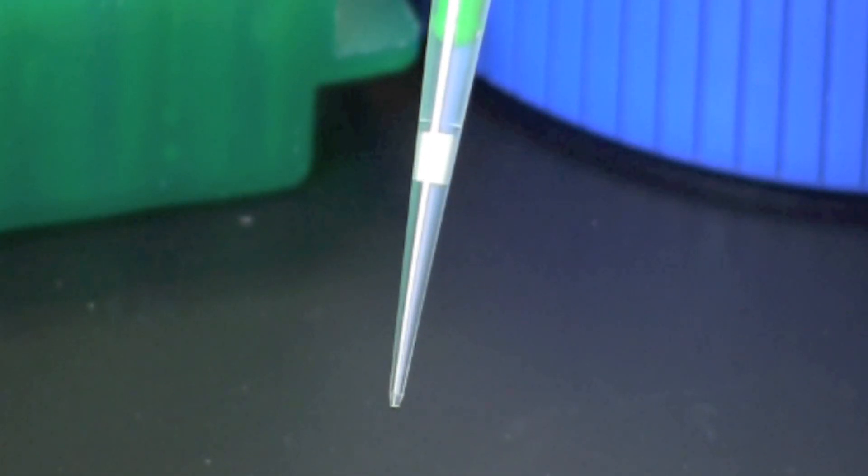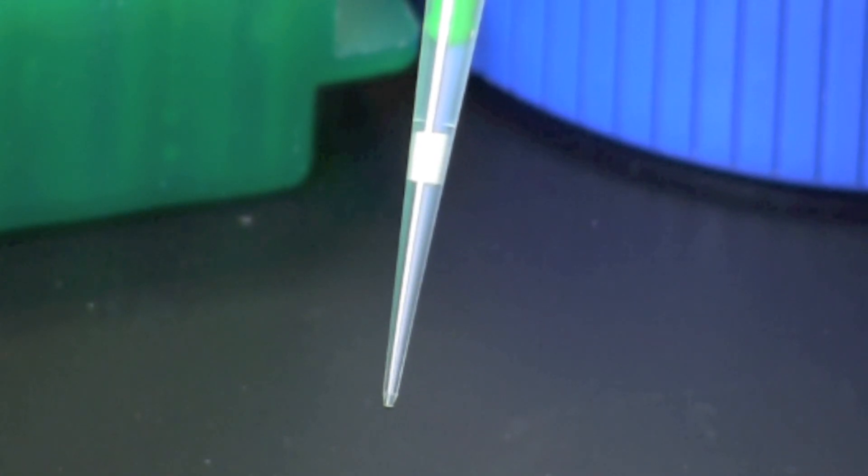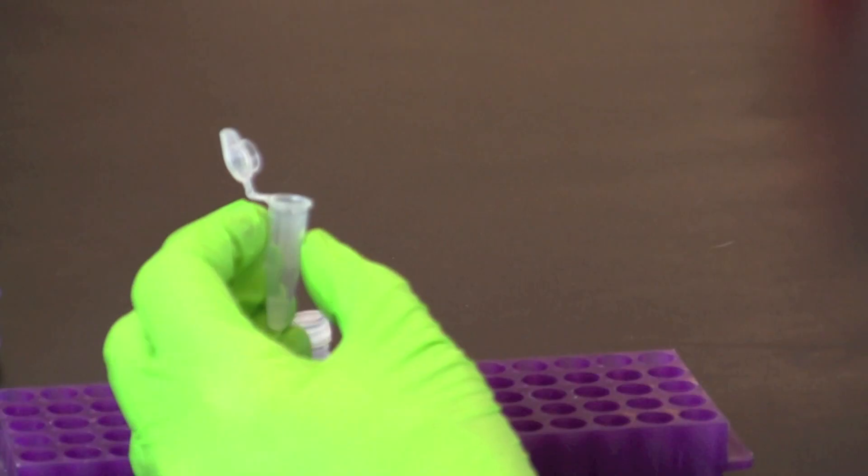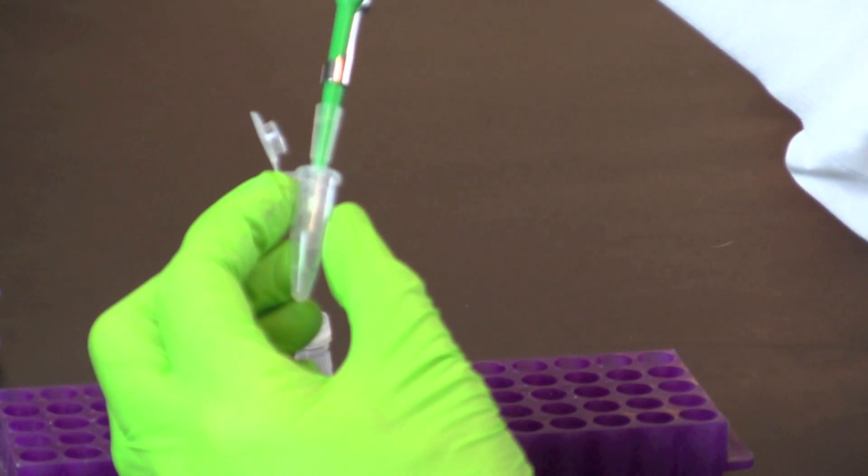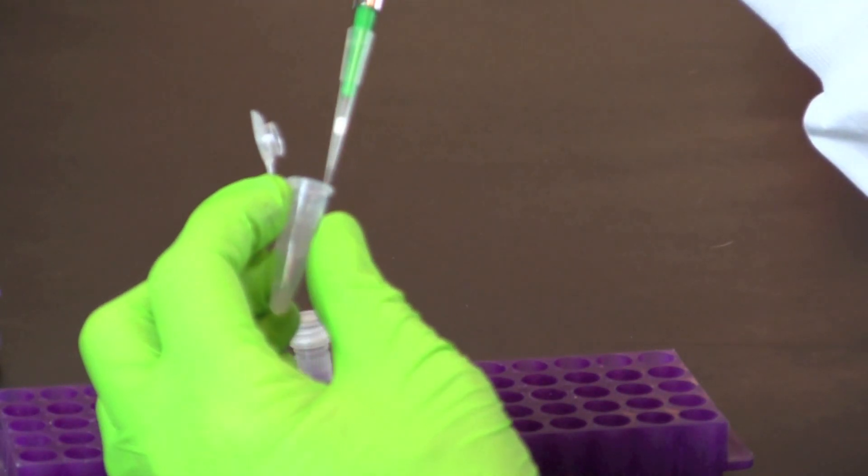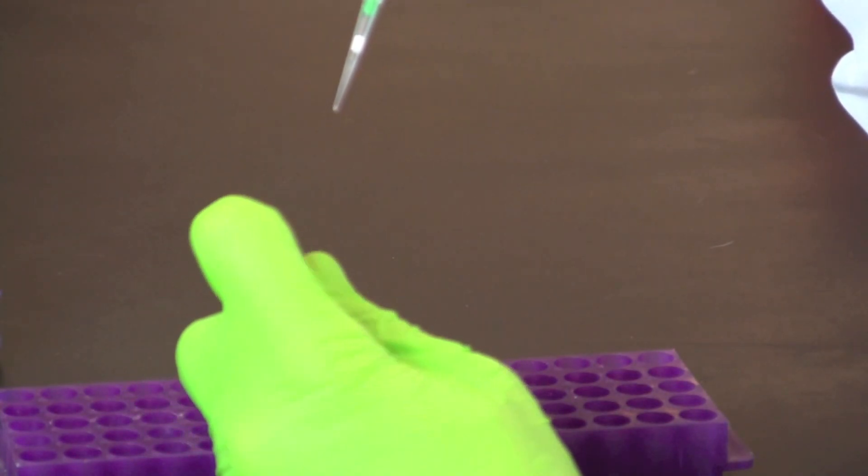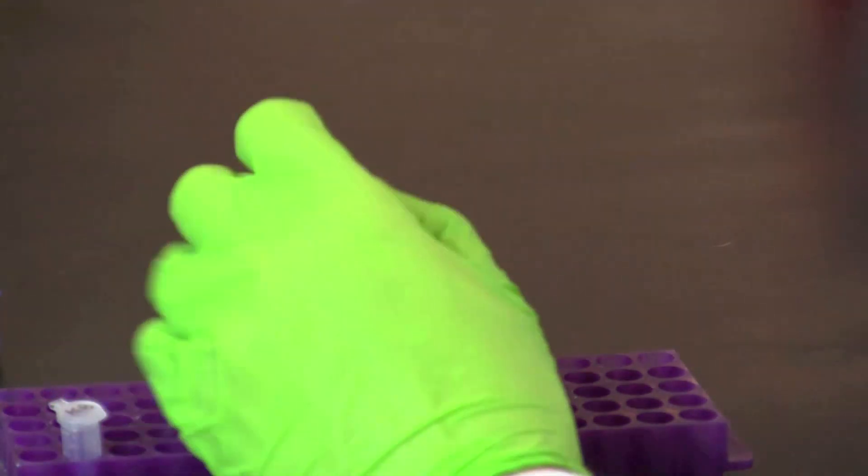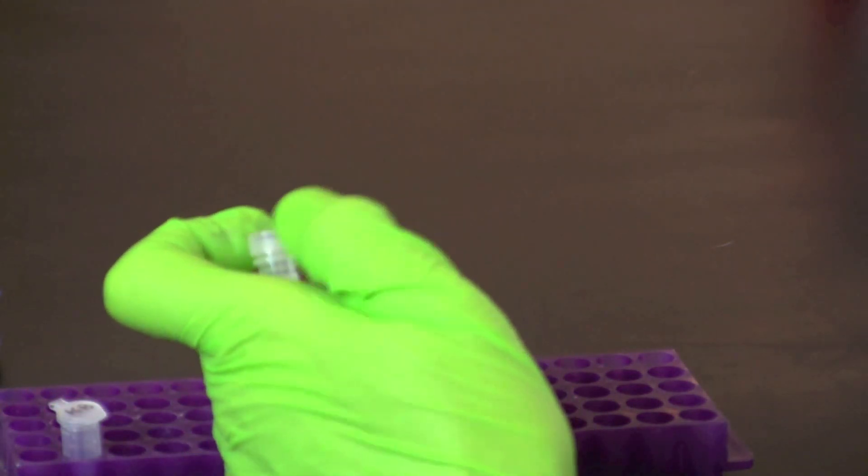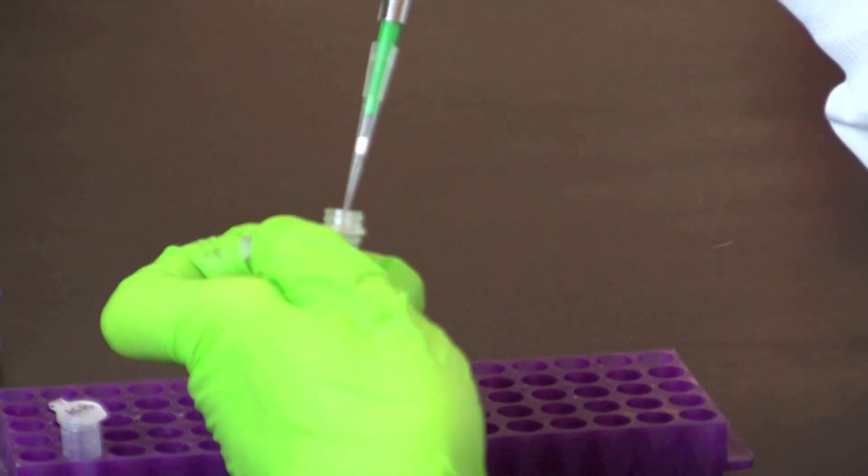Set your micropipet to 20 microliters. Always use aerosol barrier tips when setting up PCR reactions to prevent transferring aerosols from the pipette to the sample. Transfer all of the resuspended cells to a screw cap tube containing instagene matrix. This may require multiple transfers.